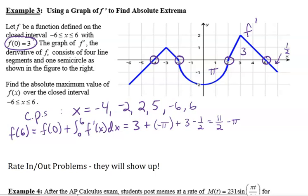F of 5 is f of 0 plus the integral from 0 to 5. We're not subtracting that one half, so it's one half bigger than f of 6, giving 6 minus π. F of 2 is equal to the original amount 3 plus just this area which is being subtracted, so that's 3 minus π.